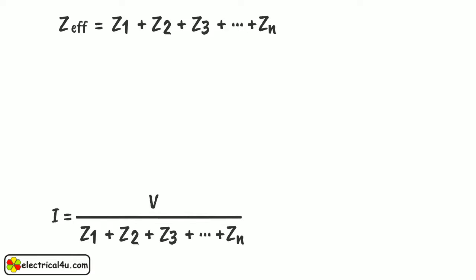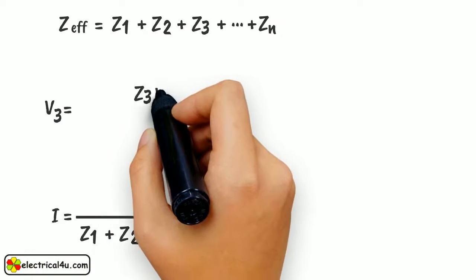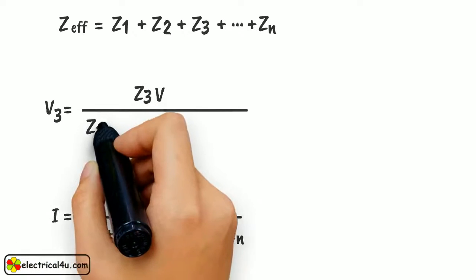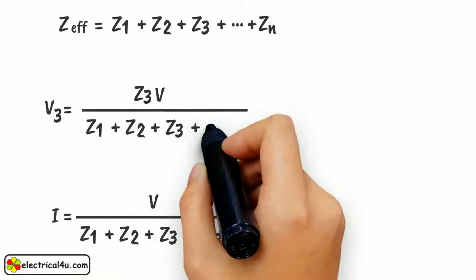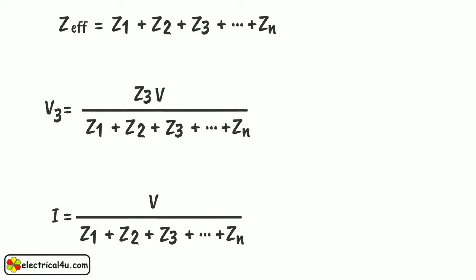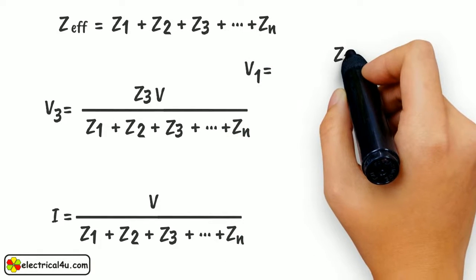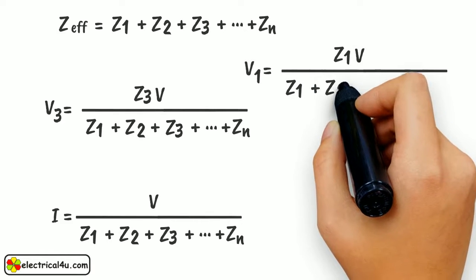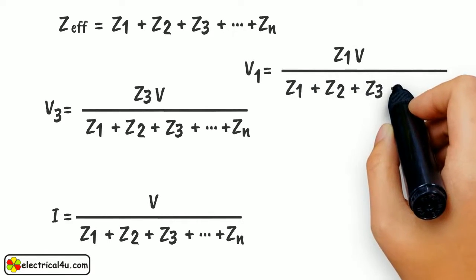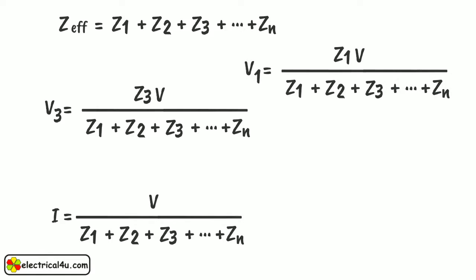Hence, voltage across Z3 is given by V3 equals Z3 into V divided by Z1 plus Z2 plus Z3 plus ... plus Zn. Similarly, voltage across Z1 will be given by V1 equals Z1 into V divided by Z1 plus Z2 plus Z3 plus ... plus Zn.